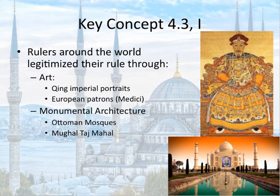Rulers also used monumental architecture, which can be seen through Ottoman mosques — the famous Blue Mosque is portrayed in the background of this slide. It's beautiful, but also shows that the ruler has the power and capacity to build that. Probably more famous than that is Shah Jahan's Taj Mahal, situated in the bottom right-hand corner of the screen, which shows Muslim features on a mausoleum situated in India. So you see syncretic architecture as well.